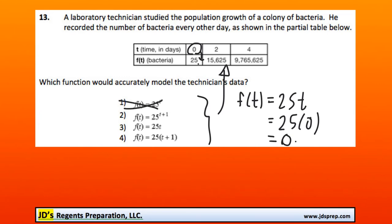Let's try option number 2, 25^(t+1), so 0 plus 1. That's the same thing as 25^1, which is in fact 25, so that's good.